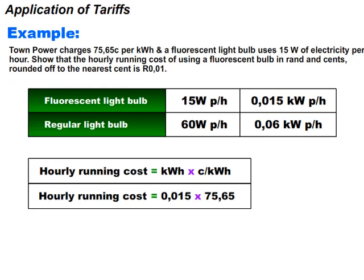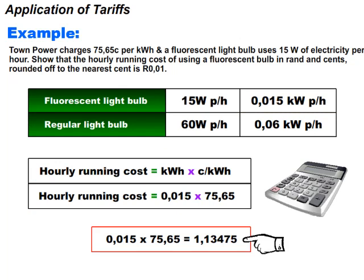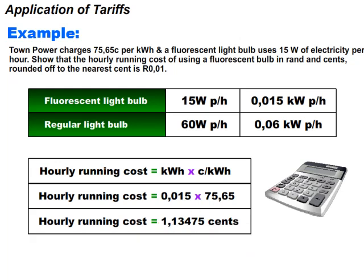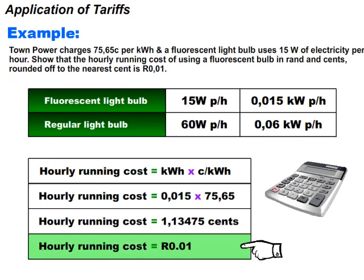Using a calculator, 0.015 multiplied by 75.65 is equal to 1.13475 cents. To convert 1.13475 cents to rands we divide by 100: 1.13475 divided by 100 is equal to 0.0113, which is closer to one cent.